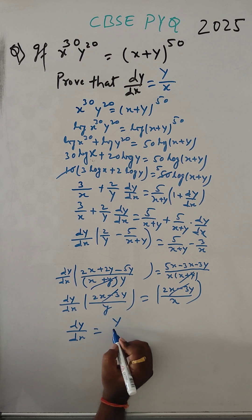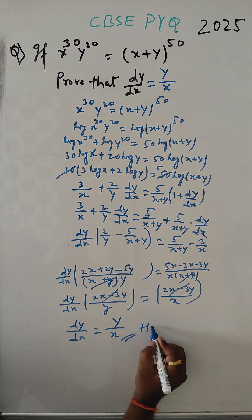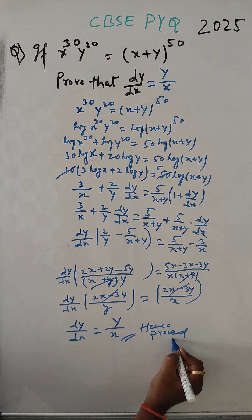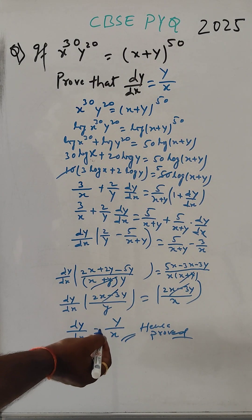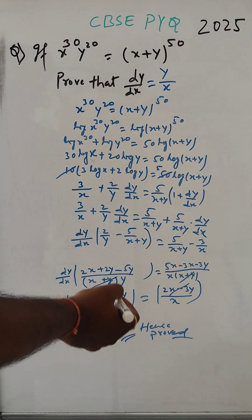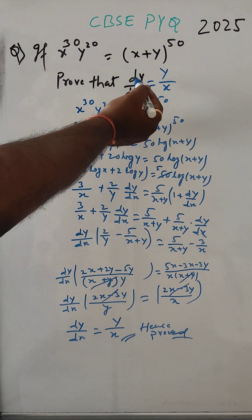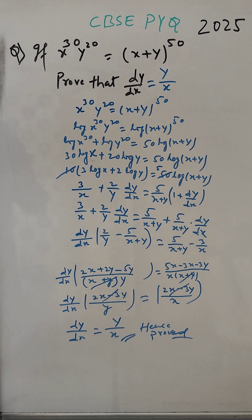Now we bring y to this side, so dy/dx is equal to y divided by x. Hence proved. This is what was required to prove: dy/dx equals y divided by x. Hence proved. Thank you for watching, please like and subscribe.